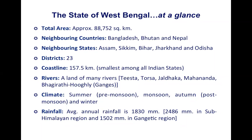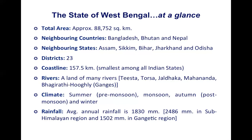There are four distinct seasons in the state: summer or pre-monsoon, monsoon, autumn or post-monsoon, and winter. In hilly areas the winter is very harsh, with temperatures dipping quite low. The average annual rainfall is around 1,830 millimeters, but the Himalayan and hilly regions generally receive more rainfall.